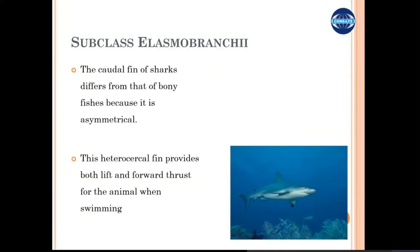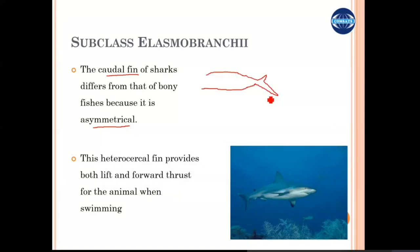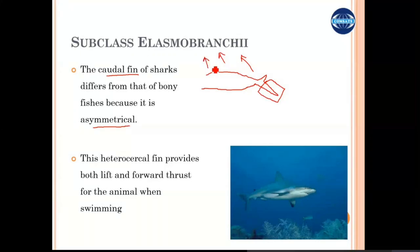Sharks have pectoral fins and caudal fins. The caudal fin is asymmetrical — one part of the fin is larger than the other. Since sharks lack a swim bladder, they need extra force to lift their body in the water. This asymmetrical, enlarged fin provides upward force during swimming, giving them buoyancy through active swimming. These fins are called heterocercal fins.